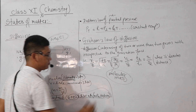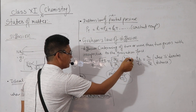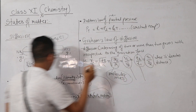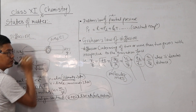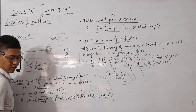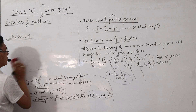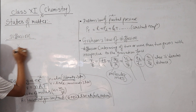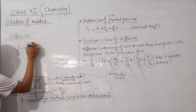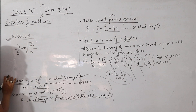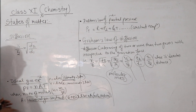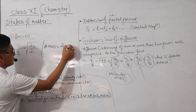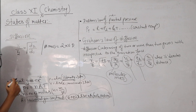Capital M is the molecular mass, and we can also show the volume relation. R1 by R2 is equal to square root of d2 by d1. We have to remember that the molecular mass is equal to 2 into the vapor density. Molecular mass is equal to 2 into the vapor density.